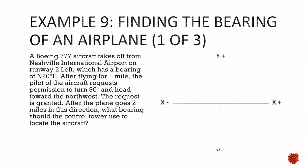So let's solve an example using bearing. So a Boeing 777 aircraft takes off from Nashville Airport on runway 2 Left, which has a bearing north 20 degrees east. Okay, so I start off 20 degrees north 20 degrees east, because we got north, east, south, west.